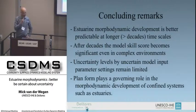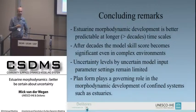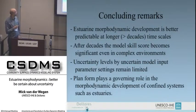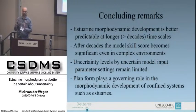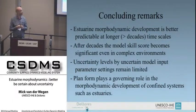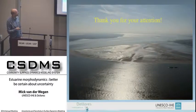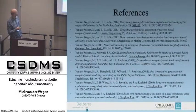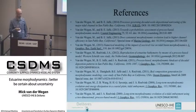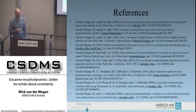Some concluding remarks. Estuarine morphodynamic development is better predictable on long time scales that exceed the morphodynamic spin-up, which is typically decades. After decades, the model skill score becomes significant, even in complex environments. Uncertainty levels from uncertain input parameters remain limited. Most importantly, the planform of your estuary determines to a high degree where sediment deposits. Thank you for your attention — I have a list of publications from the past six years, an admittedly egocentric list, but it includes many useful references to the work of others.